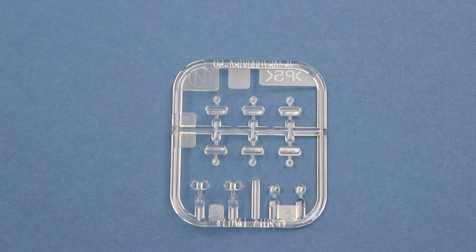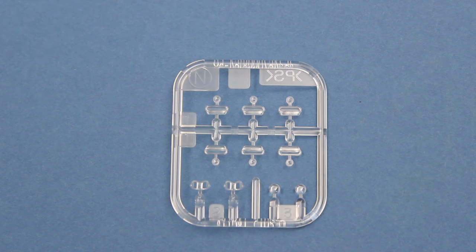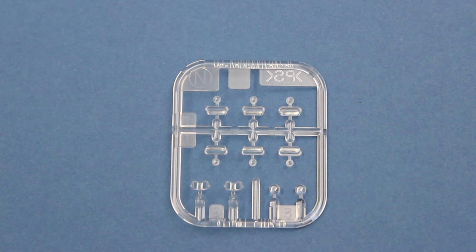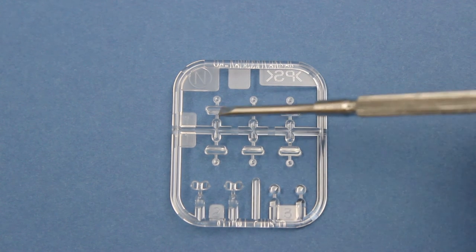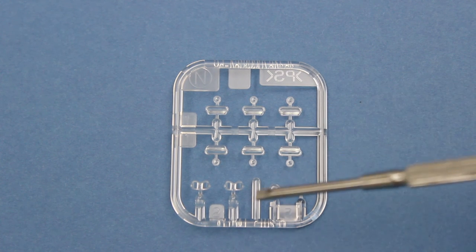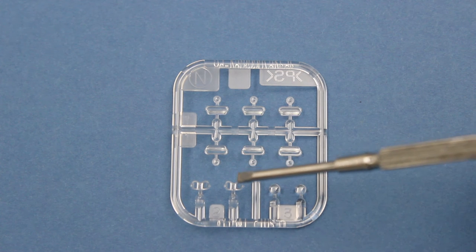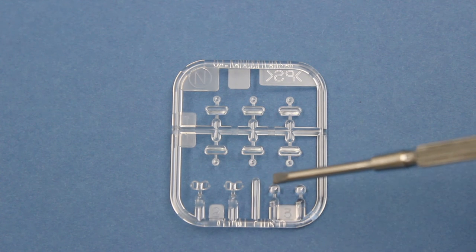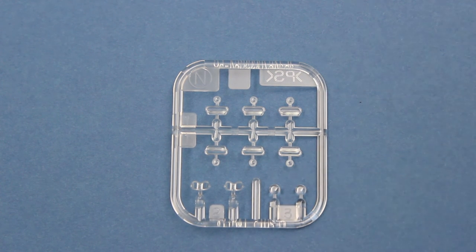And this clear sprue is the last hard plastic sprue. We have six vision ports here for the commander's vision cupola. There's only one figure but we have two sets of goggles. And we have some lenses for the headlamps.